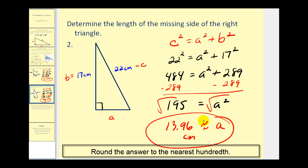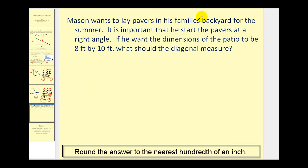Let's go ahead and take a look at an application problem now. Mason wants to lay pavers in his family's backyard for the summer. It is important that he start the pavers at a right angle. If he wants the dimensions of the patio to be eight feet by ten feet, what should the diagonal of the patio measure? Okay, so we have a rectangle that's eight feet by ten feet. Let's go ahead and sketch the diagonal.